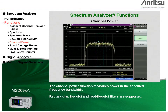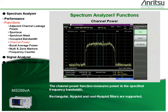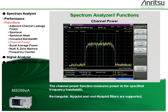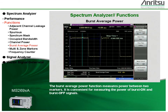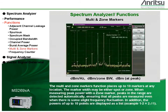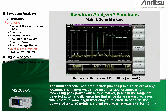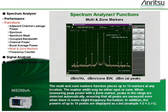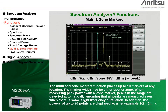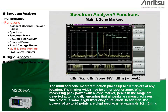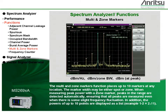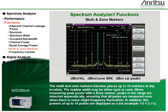The channel power function measures power in the specified frequency bandwidth. Rectangular, Nyquist, and root Nyquist filters are supported. The burst average power function measures power between two markers and is convenient for measuring the power of burst-on and burst-off signals. The multi and zone markers function places up to 10 markers at any location. The marker width may be either spot or zone. When measuring peak power with a zone marker, peaks in the range are detected automatically, ensuring that all peaks are measured even when there is some slight frequency fluctuation.